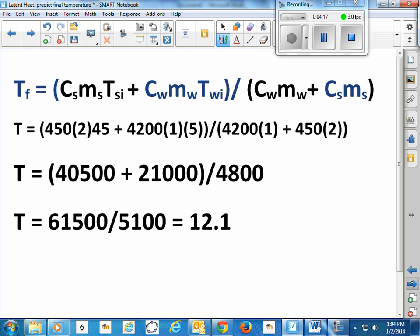Heat capacity of steel is about 450, according to some texts. Heat capacity of water is about 4,200. Two kilograms of steel, one kilogram of water, initial temperature of 45 for the steel, initial temperature of 5 for the water. Anyways, plugging in those numbers predicts the final temperature of 12 degrees.